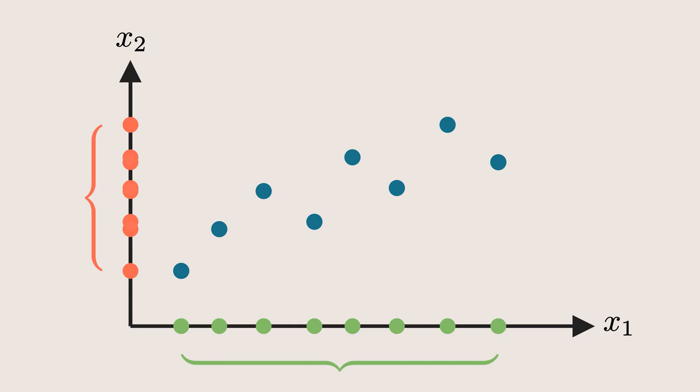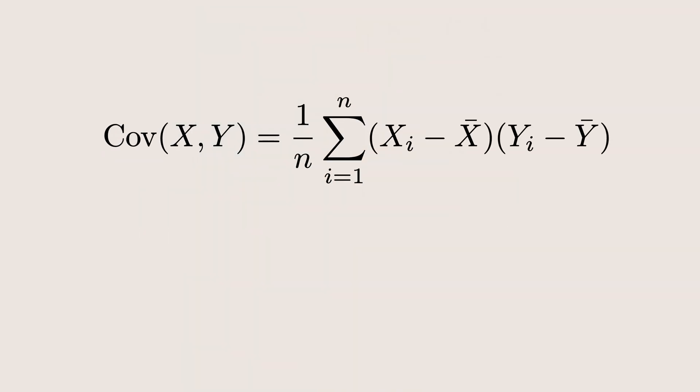Now before we dive into the intuition of PCA, we first need to understand a very important concept, covariance. Covariance measures how two features relate to each other. In other words, how changes in one feature affect the other. The formula for covariance looks like this, where X bar and Y bar are just the means of the two features.